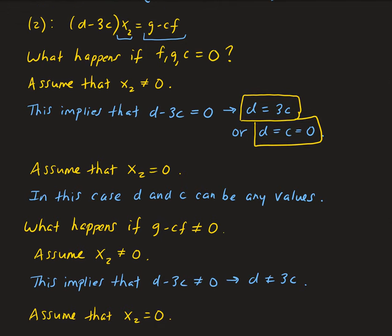So the values: if f, g, and c are equal to 0 and x2 is not 0, then d equals 3c, or d and c are both 0. If g minus cf is not 0 and x2 is not 0, then d is not equal to 3 times c. We started by writing the system in matrix form, did a row operation to get echelon form, and then did algebraic analysis. When doing these types of problems, you have to consider every possible case — it's very important math used later in this course.